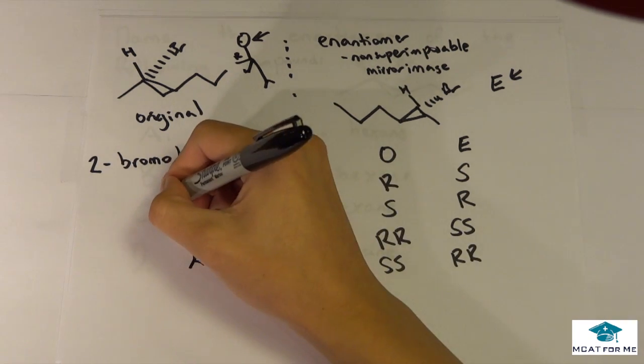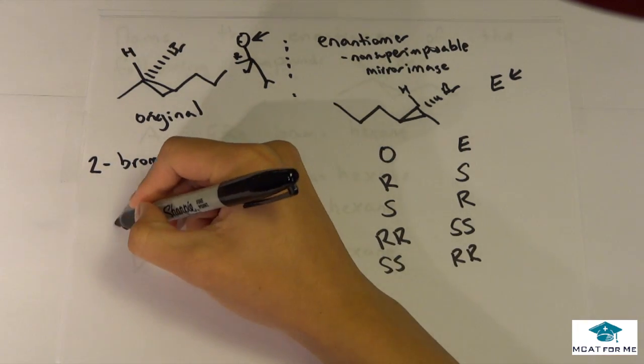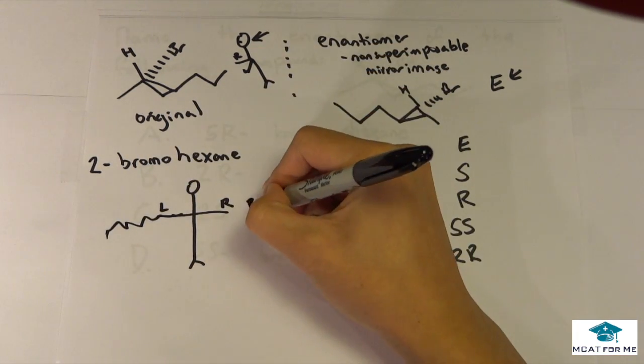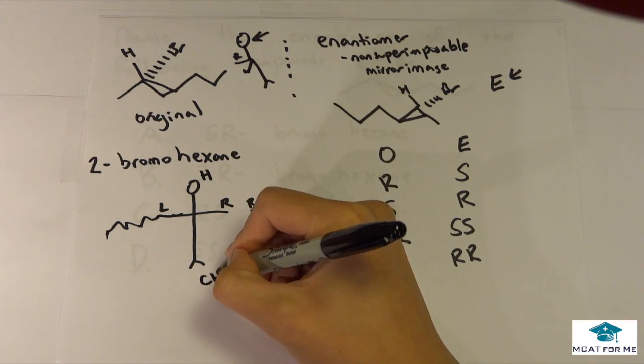We place his body flat down on paper. His left arm is the long alkane chain, his right arm is the bromo, his head is hydrogen, and his foot is CH3.